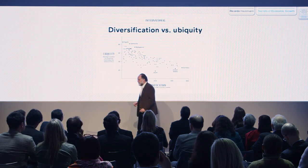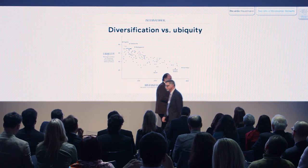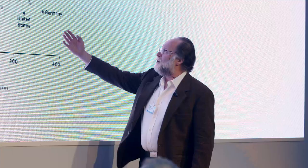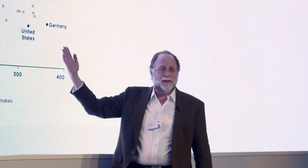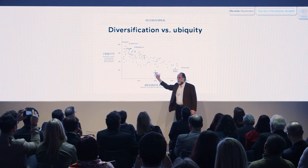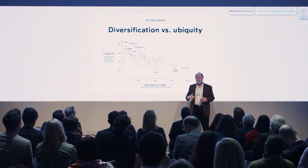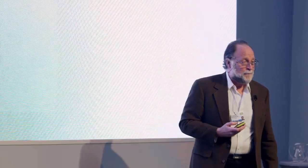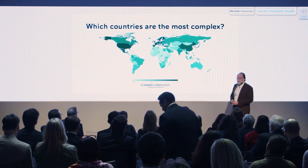We can observe the telltales of this process by looking at how many products countries are able to make and how hard it is to make those products. For example, the most diverse country in the world is Germany, and there are very few other countries able to do the things that Germany is able to do. The poorest countries in the world make few things, and they make things that everybody knows how to make — shorter words. With these tools, we developed an index attempting to measure how many letters a country has, how much productive capability a country has. This is our picture of the world in terms of economic complexity.